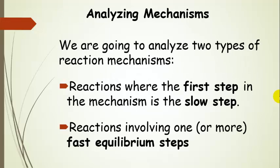Now we're going to analyze two types of reaction mechanisms. The first is a reaction where the first step in the mechanism is the slow step — those are fairly straightforward and easy. The second type involves one or more fast equilibrium steps. Our example will have one fast equilibrium step, but there are examples where there is more than one.